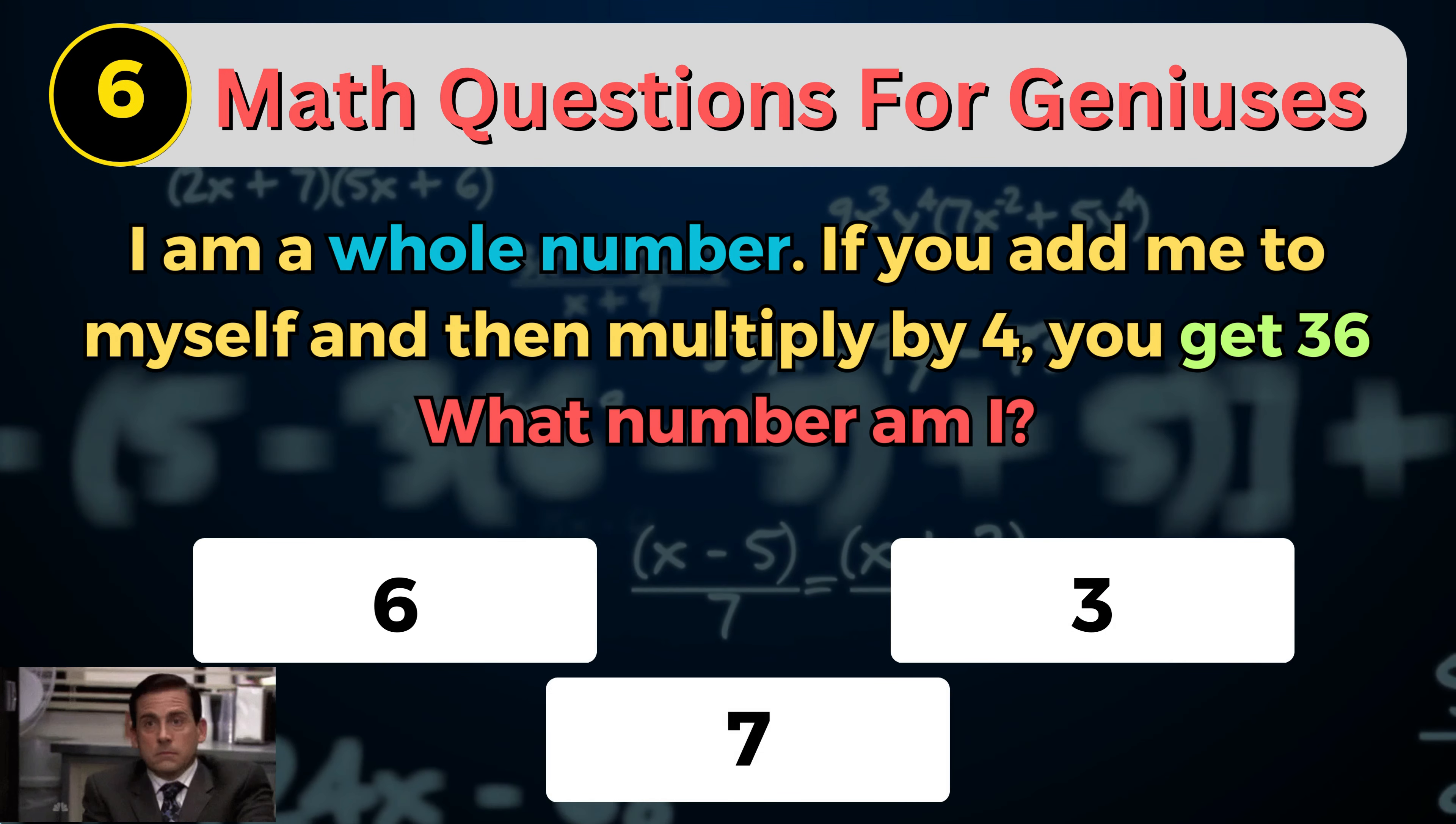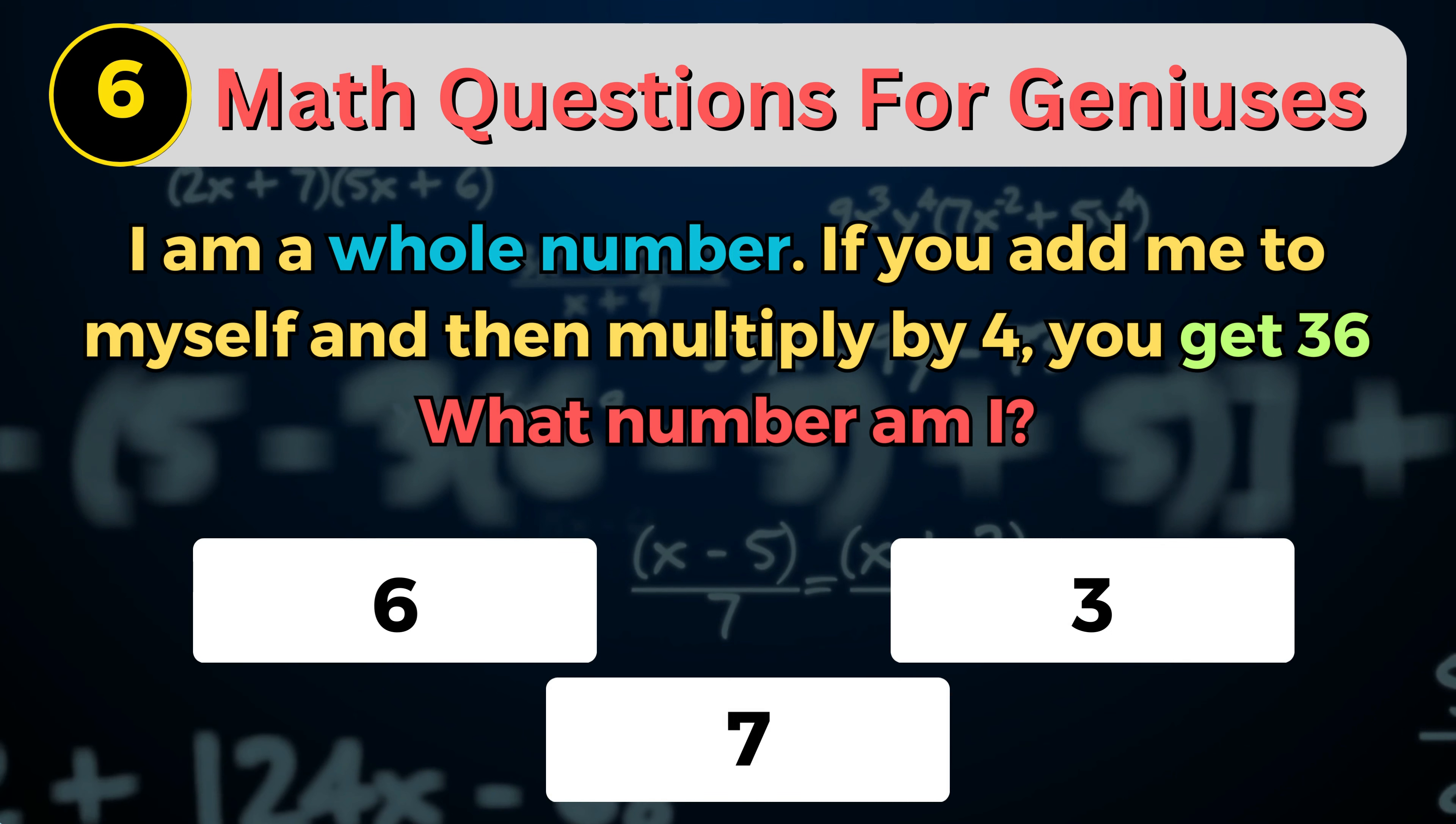Number 6. If you add me to myself and then multiply by 4, you get 36. What number am I?